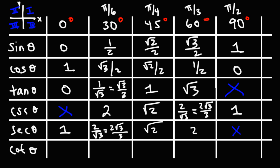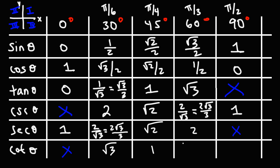For cotangent, which is the reciprocal of tangent: cotangent 0 is 1 over 0, which is undefined. Cotangent 30 — taking the reciprocal of root 3 over 3, it's easier from the form root 3 over 1, so that's just root 3. Cotangent 45 is 1 over 1, which is 1. Cotangent 60 is 1 over root 3, or root 3 over 3. For cotangent 90, since cotangent is cosine over sine, it's 0 divided by 1, which gives us 0.